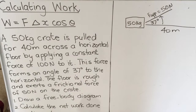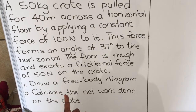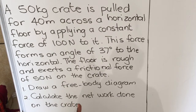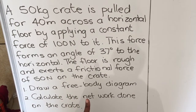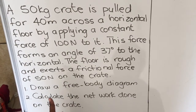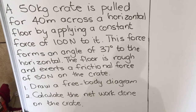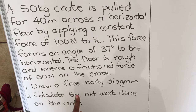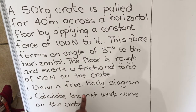Let's look at the example. A 50 kilogram crate is pulled for 40 meters across the horizontal floor by applying a constant force of 100 newtons. This force forms an angle of 37 degrees to the horizontal. The floor is rough and exerts a frictional force of 50 newtons on the crate.